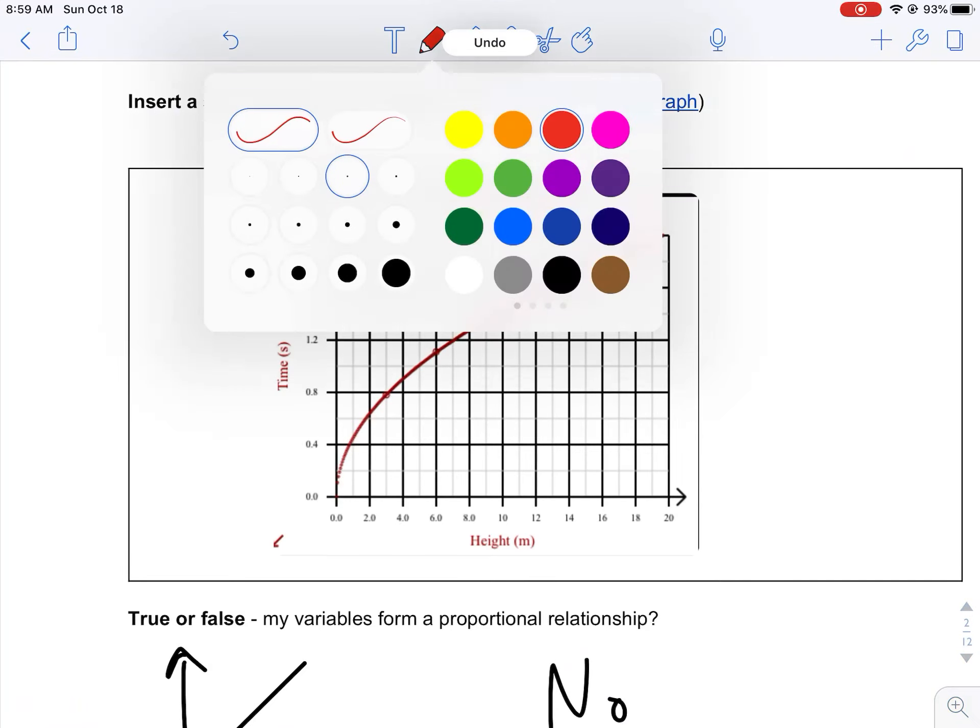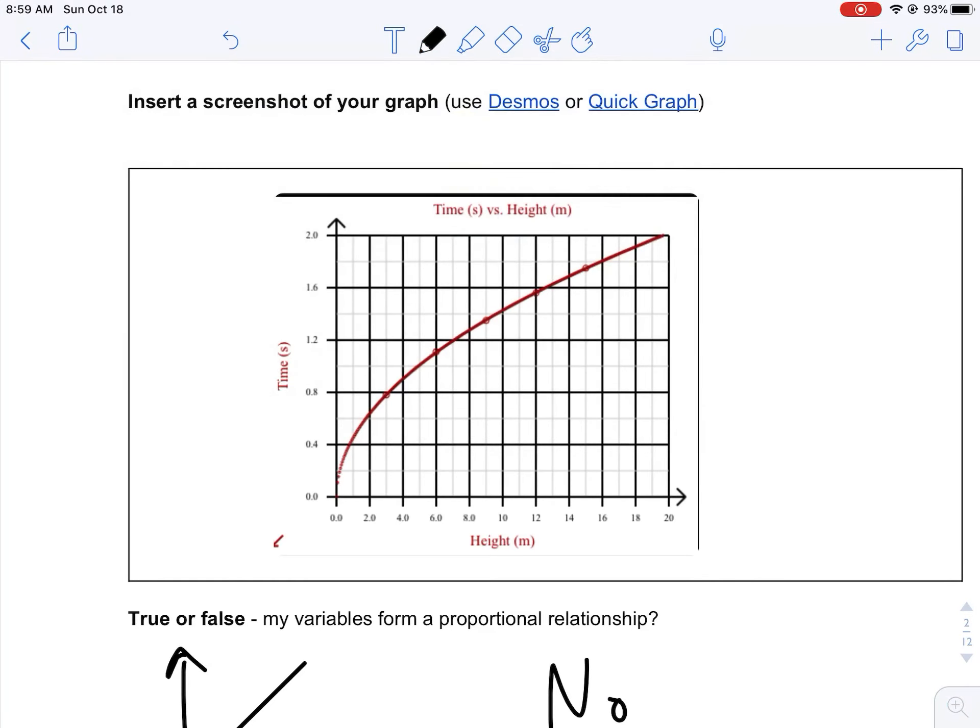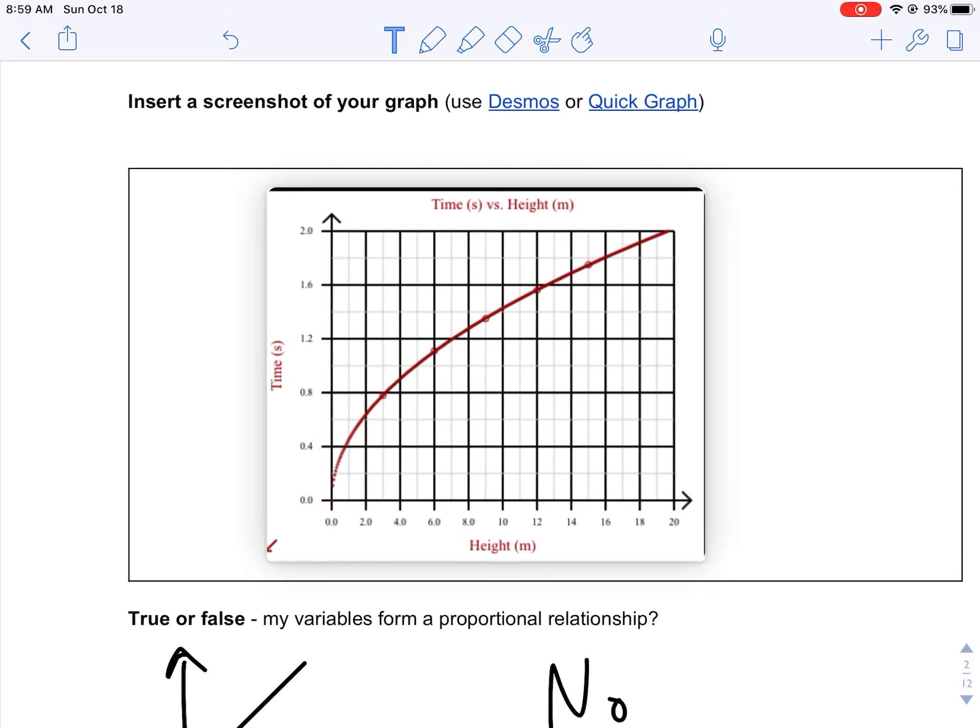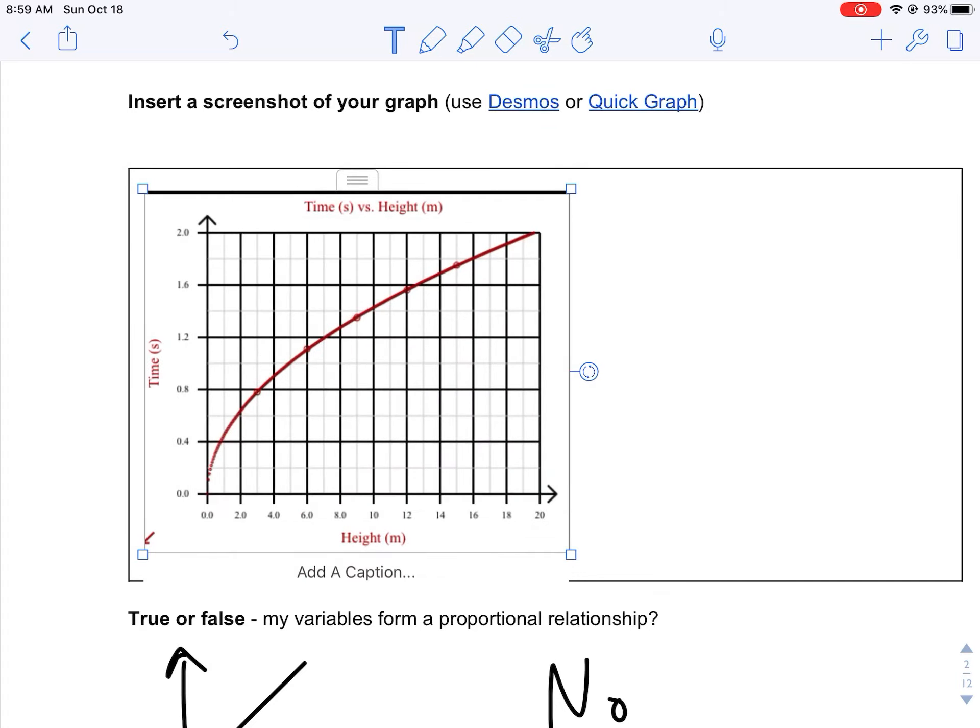Let's go ahead and write that in here. Y equals 0.45, I kind of ran out of room. Let's move it over. Y equals 0.45, I think it was one two, we'll just round off, times the square root of x.